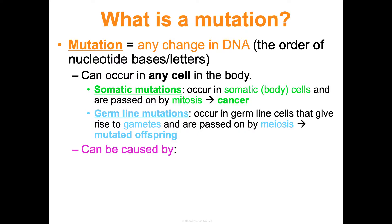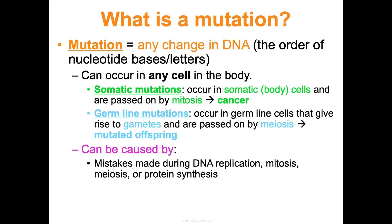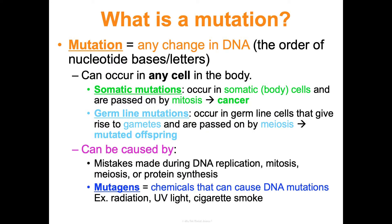Mutations can be caused by many things — a mistake during DNA replication, mitosis, meiosis, or protein synthesis. They can also be caused by a mutagen: a chemical that causes DNA mutations, like radiation, UV light, or cigarette smoke. A carcinogen specifically causes cancer; a mutagen is a broader term — it causes a mutation, which may or may not result in cancer.